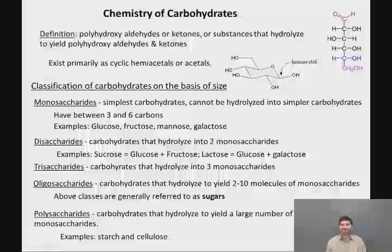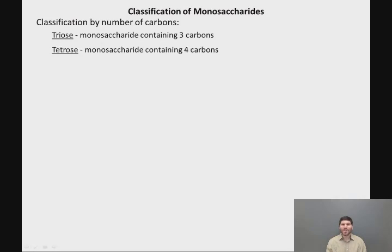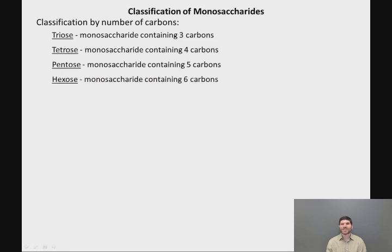Drilling down into monosaccharides, there are names based on the number of carbons they contain. A three-carbon monosaccharide is called a triose, a four-carbon is called a tetrose, a five-carbon is called a pentose, and a six-carbon is called a hexose. The prefixes pent and hex are familiar from pentane and hexane, and tri and tetra are the standard prefixes for three and four.